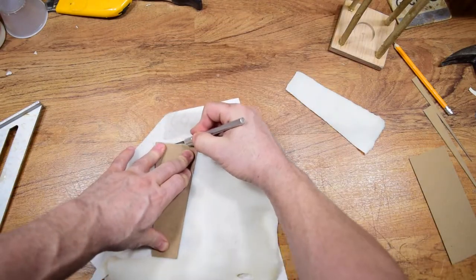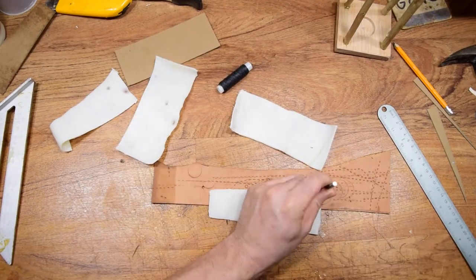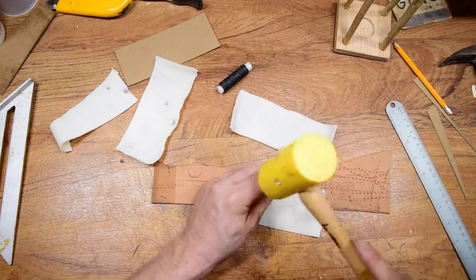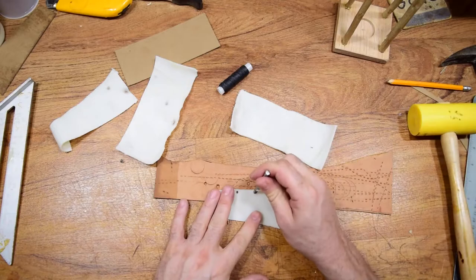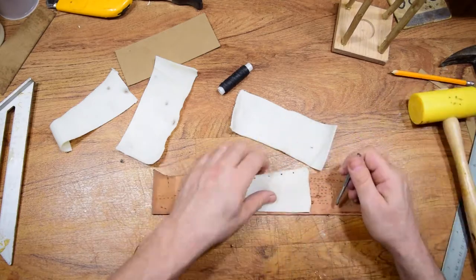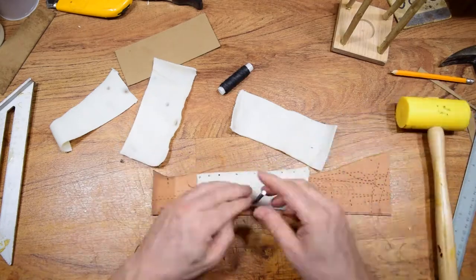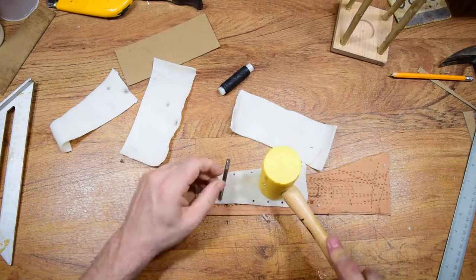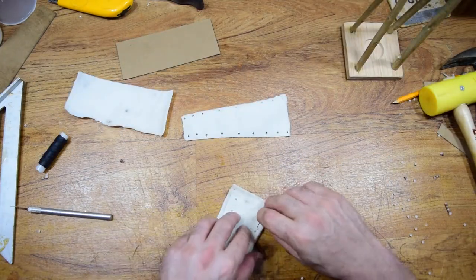So once everything was cut out, it was really just a simple matter of punching the holes. And you don't really have to punch the holes. I just wanted to. I thought it would look good and make it easier for stitching. I didn't even have to use a needle when I punched these holes. These things were tiny holes. It's the smallest punch I had. But doing it this way, I was able to stitch these things together without even having to use a needle.